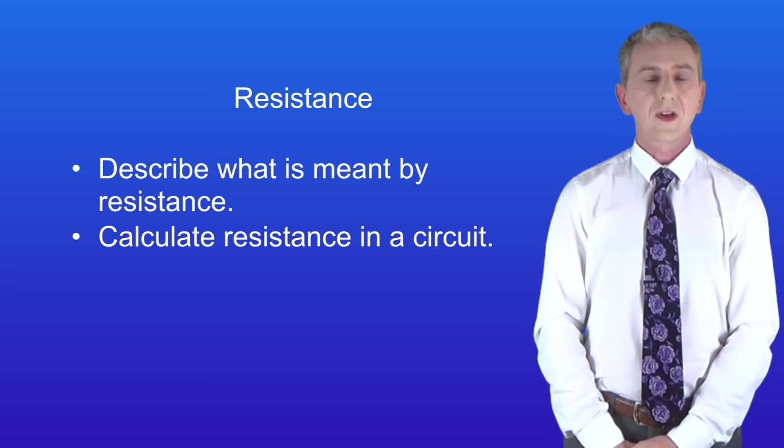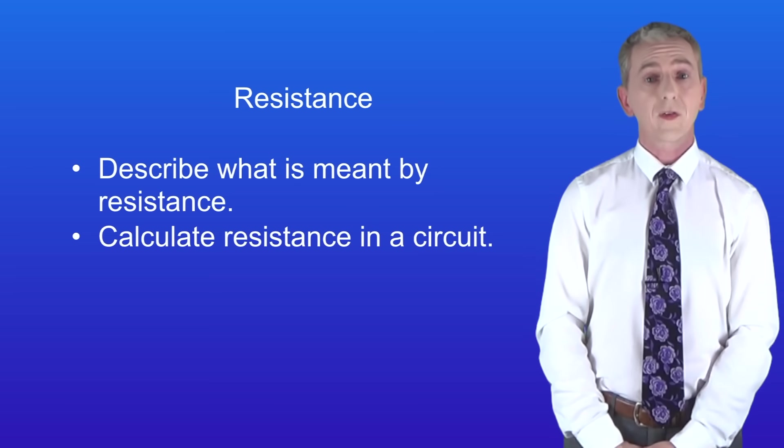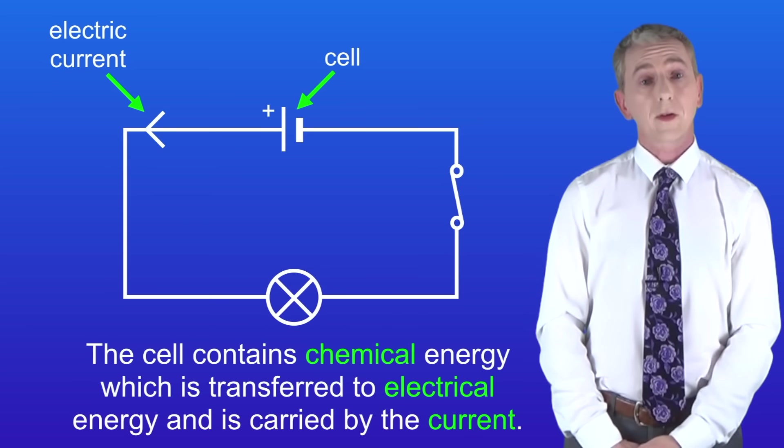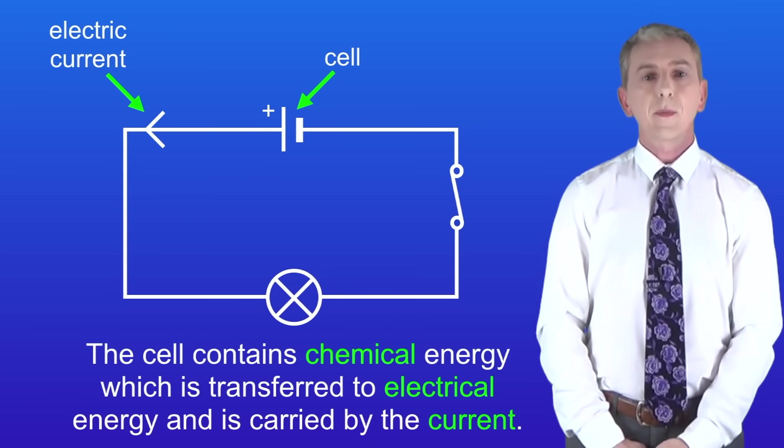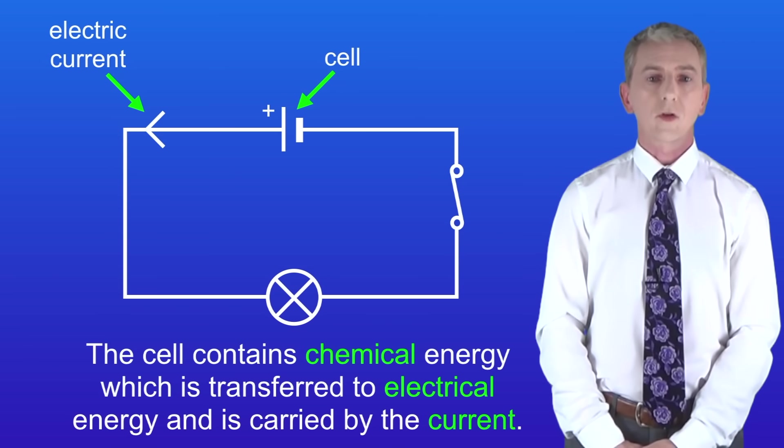Over the last few videos we've seen that electricity involves a transfer of energy in an electric circuit. The cell contains chemical energy which is transferred to electrical energy and is carried by the current. Remember that the current is simply a flow of electrons around the circuit.